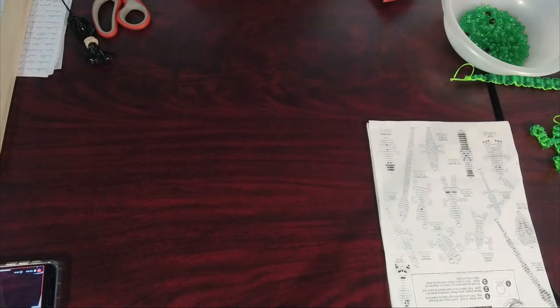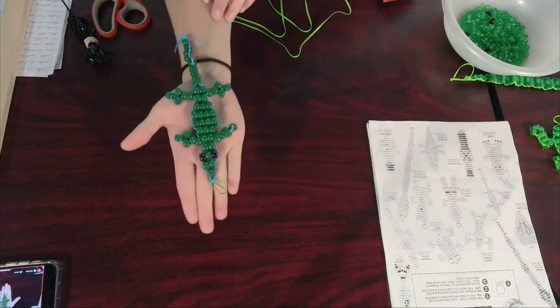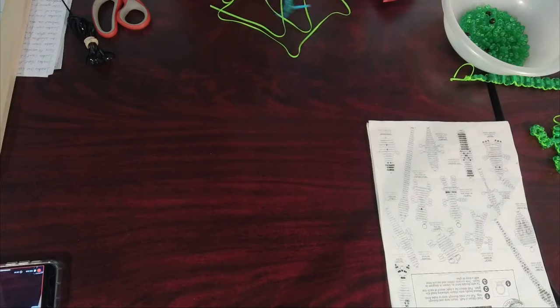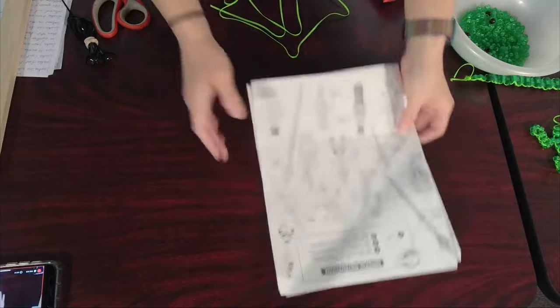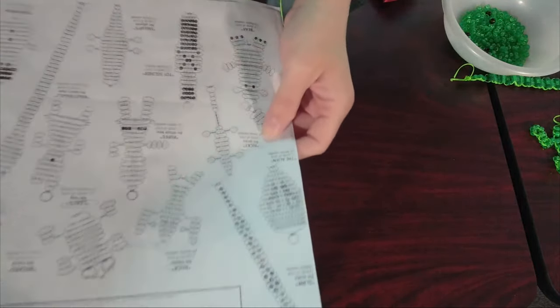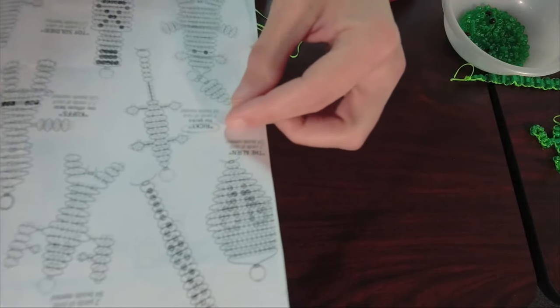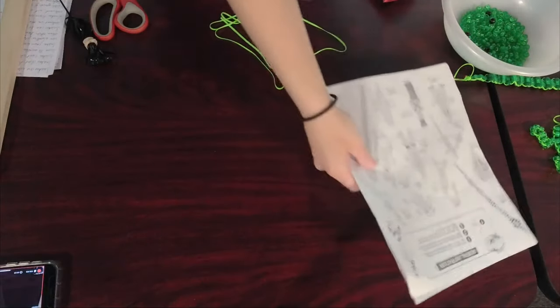All right, we're going to start with the gecko. The gecko is the one that requires the least amount of beads so it's a good one to start off with. This is Ricky the gecko. Ricky the gecko requires two yards of cord and 58 beads. This is the pattern and I'll walk through the pattern as well.